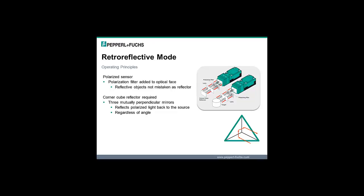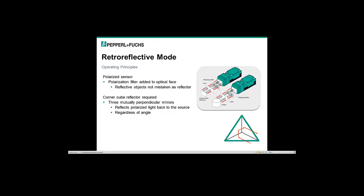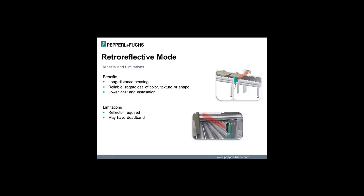A specific type of reflector called a corner cube reflector is needed. A corner cube reflector consists of three mutually perpendicular mirrors that vertically polarize the light and ensure that the light will reflect back to the source regardless of its angle. Benefits of retroreflective sensors include long sensing distances, high detection reliability regardless of object color, texture, or shape, and lower cost and installation effort compared to a through-beam sensor.